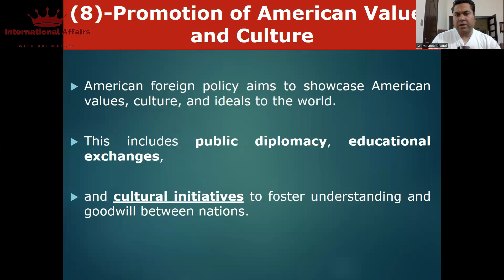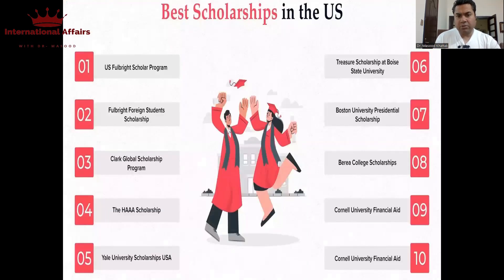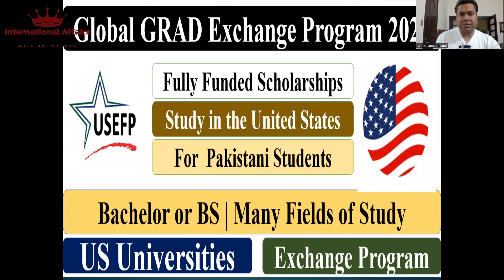اس کے علاوہ promotion of American values and culture — یہ public diplomacy کی domain کی چیز ہے جس کے اندر educational exchanges اور cultural initiatives ہوتے ہیں۔ For example Fulbright scholarships کے اندر ہزاروں لوگ امریکہ میں جا کے تعلیم حاصل کرتے ہیں — پاکستان سے بھی بہت سارے جاتے ہیں۔ اس کا budget تقریباً $741 billion dollars ہے، اس کے علاوہ بہت ساری scholarships available ہوتی ہیں۔ آج کل انہوں نے BS level کے young students کے لیے Global Grad Exchange Program launch کیا ہوا ہے جس کے ذریعے بہت سارے بچے چھ مہینے سے ایک سال کے لیے امریکہ میں time spend کرتے ہیں اور وہاں کی culture سمجھتے ہیں۔